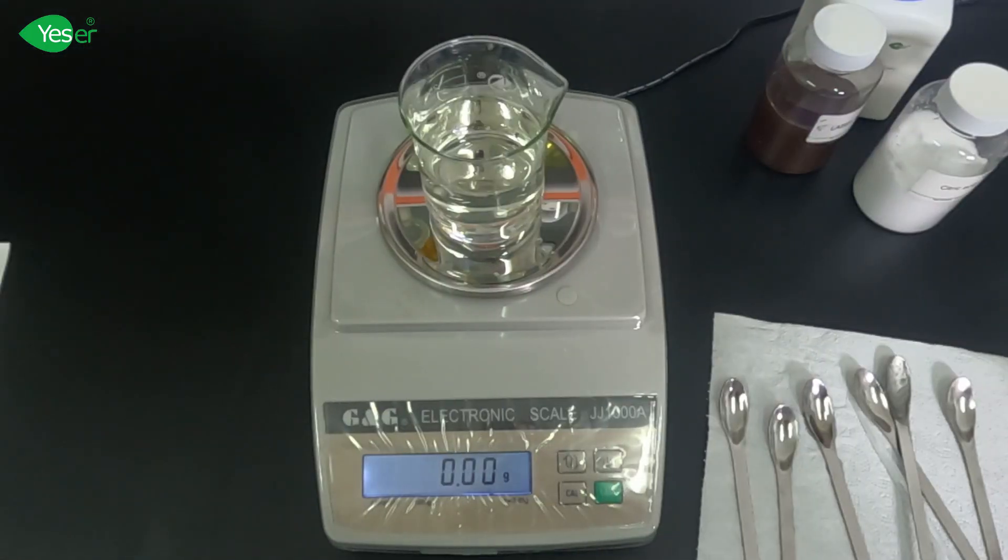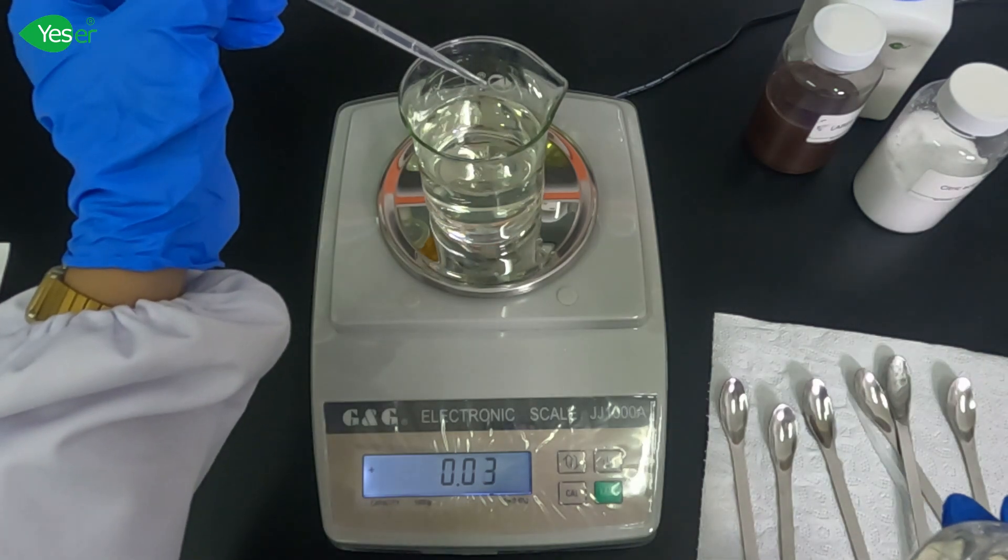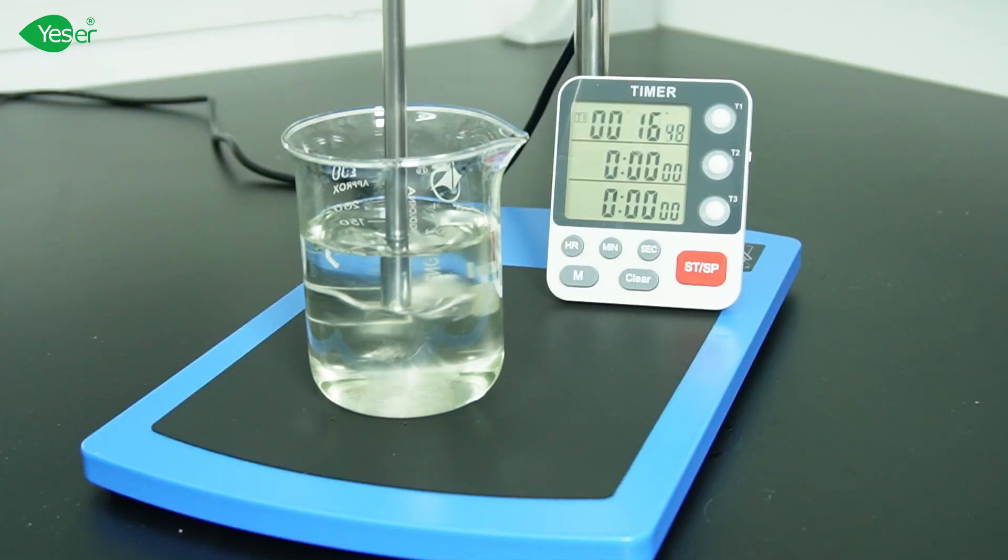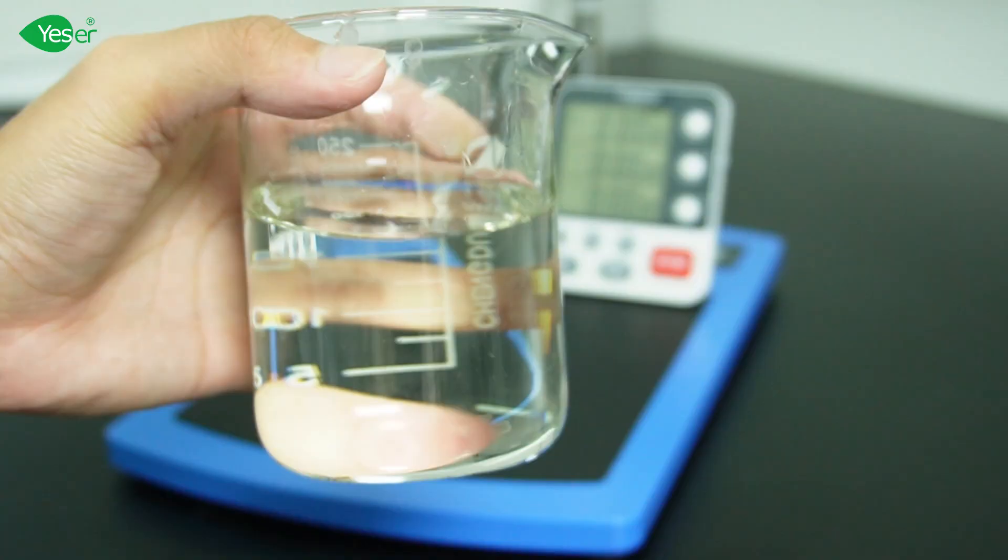Next, let's add our CAB 35%, weigh 2 grams of this or 1% for the formula. CAB 35 is an amphoteric surfactant that not only boosts foam but also contributes to the viscosity of the detergent, enhancing the overall texture and feel. Stir well to ensure uniformity of the solution.